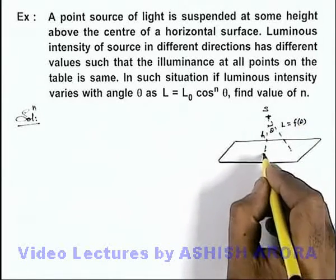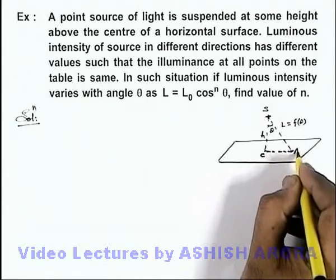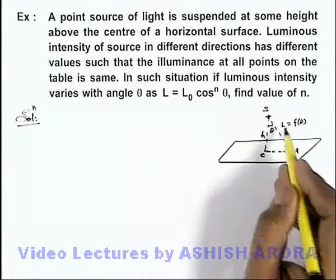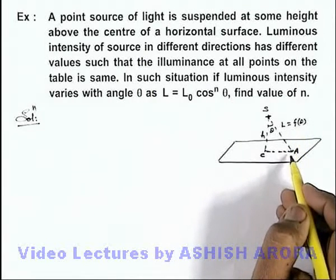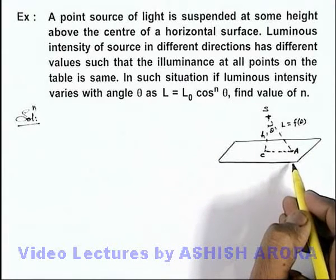From the center of the horizontal surface at some distance at point A, according to the given situation, the value of L is such that illuminance at point A must be same as that at C, or everywhere on the surface.